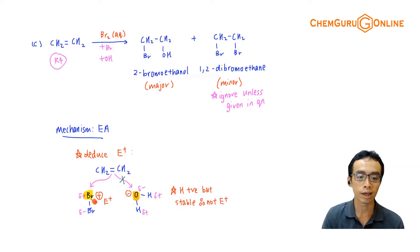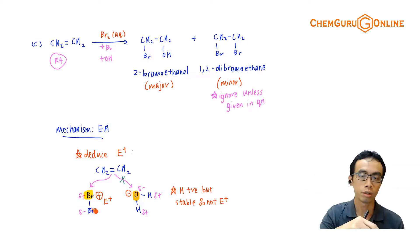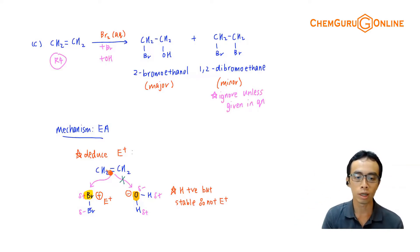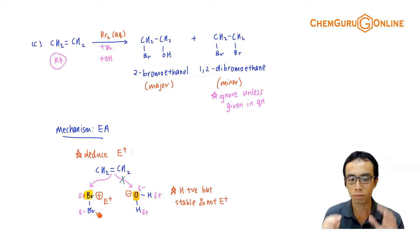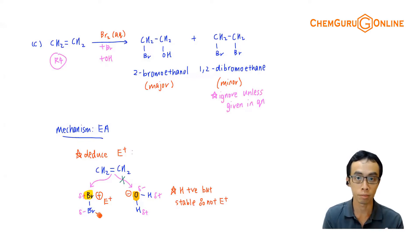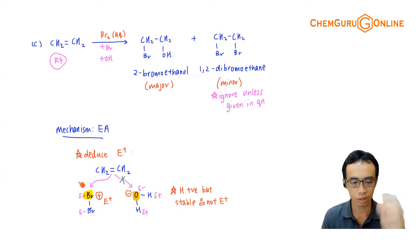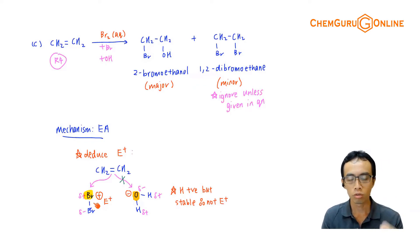If I know that this guy is delta plus and this guy is delta minus, later when I draw the arrow pushing to represent the movement of electrons, I know that the electrons will go to Br plus - it will not go to Br minus. So we have to be very specific in terms of who is the electrophile and who is the nucleophile.